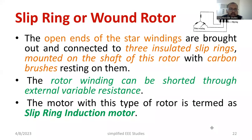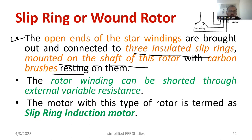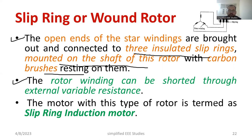Referring to the diagram, the open ends of the star winding are brought out and connected to three insulated slip rings, which are mounted on the shaft of the rotor. Carbon brushes are used for collecting power. The rotor winding can be shorted through the external variable resistance — depending on the starting torque required, you can add more resistance.